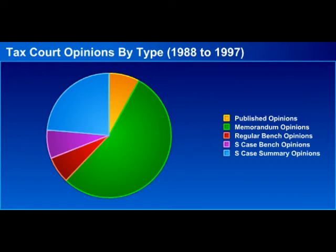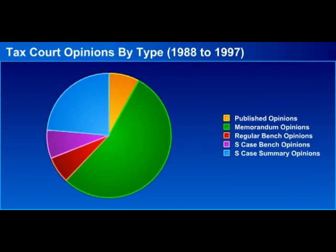Even with this low number of decisions resulting in precedent, from the IRS's perspective, one negative precedent could cost the Treasury millions of dollars, as it could be adopted by thousands of taxpayers. So the IRS is motivated to settle with individual taxpayers based not only on the hazard of litigation as to that particular tax liability, but also in regards to taxpayers in general facing that particular tax issue.